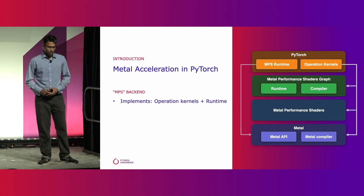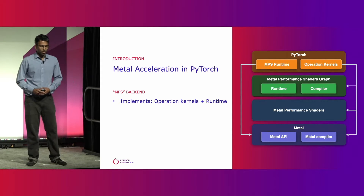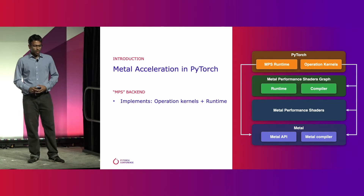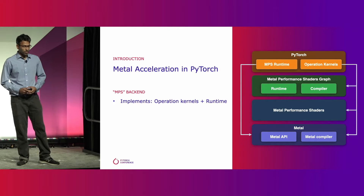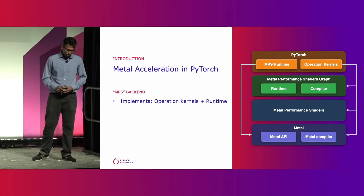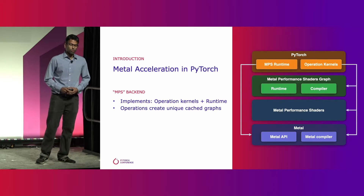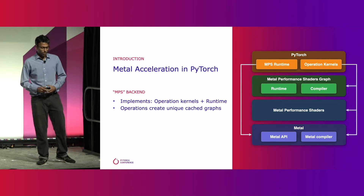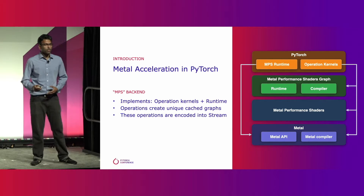The PyTorch MPS backend implements both the operation kernels and the runtime framework, which calls into MPS Graph, MPS, and our Metal frameworks. This enables PyTorch to use highly efficient kernels from MPS, along with Metal's command queues, command buffers, and synchronization primitives. Operations in PyTorch will create unique graphs which will be cached, reducing CPU overhead, and these operations are then encoded onto a stream.